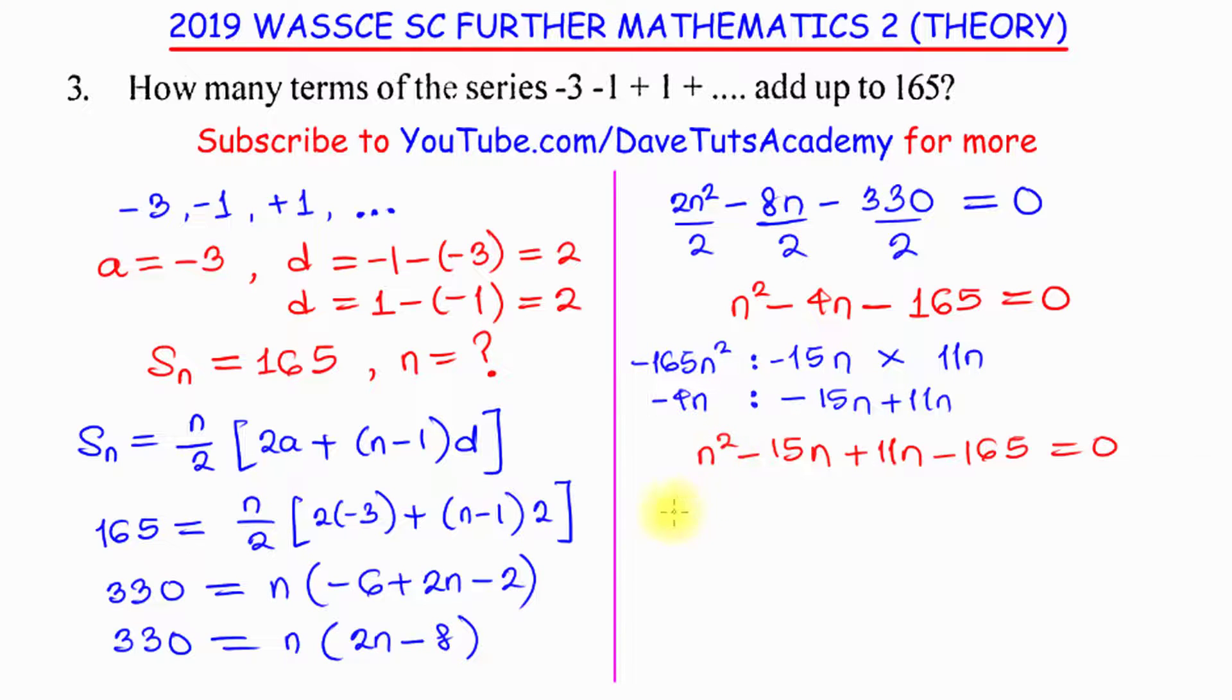So, I can solve for that to say, in the first case, n is common to both. This will remain n minus 15, then plus 11 and this will also remain n minus 15. This is equal to 0. So, looking at that, I have two factors, n plus 11 multiplied by n minus 15 is equal to 0.